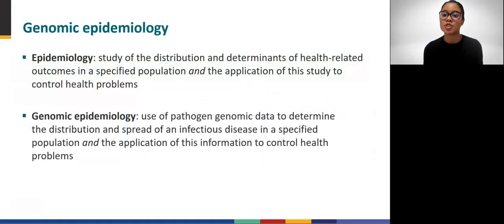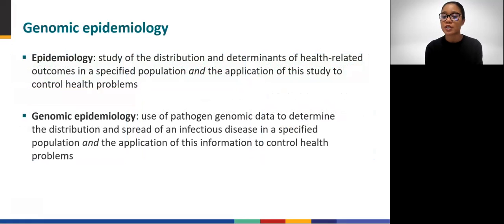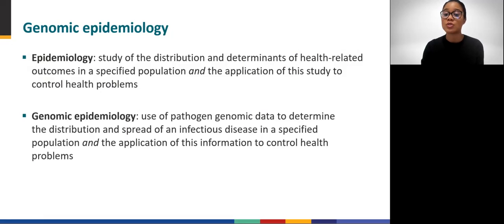To introduce genomic epidemiology, we can start with the epidemiology component. As a public health professional, you know that epidemiology is the study of the distribution and determinants of disease in a population and its application to control health problems. In genomic epidemiology, genomic data is used to aid in epidemiologic investigations. In the context of infectious diseases, public health professionals can use a pathogen's genomic data to better define the distribution and spread of an infectious disease and to apply this information to control it.